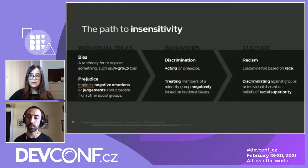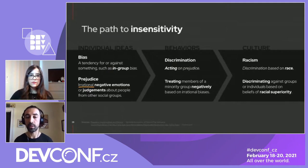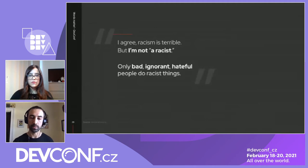You could be a white supremacist without being white — that's also a very complex subject. We could be talking about this and you could be thinking: 'I agree, racism is terrible, but I'm not a racist. Only bad, ignorant, hateful other people do these racist things.' We'd like to talk about the dangers of blaming the other.